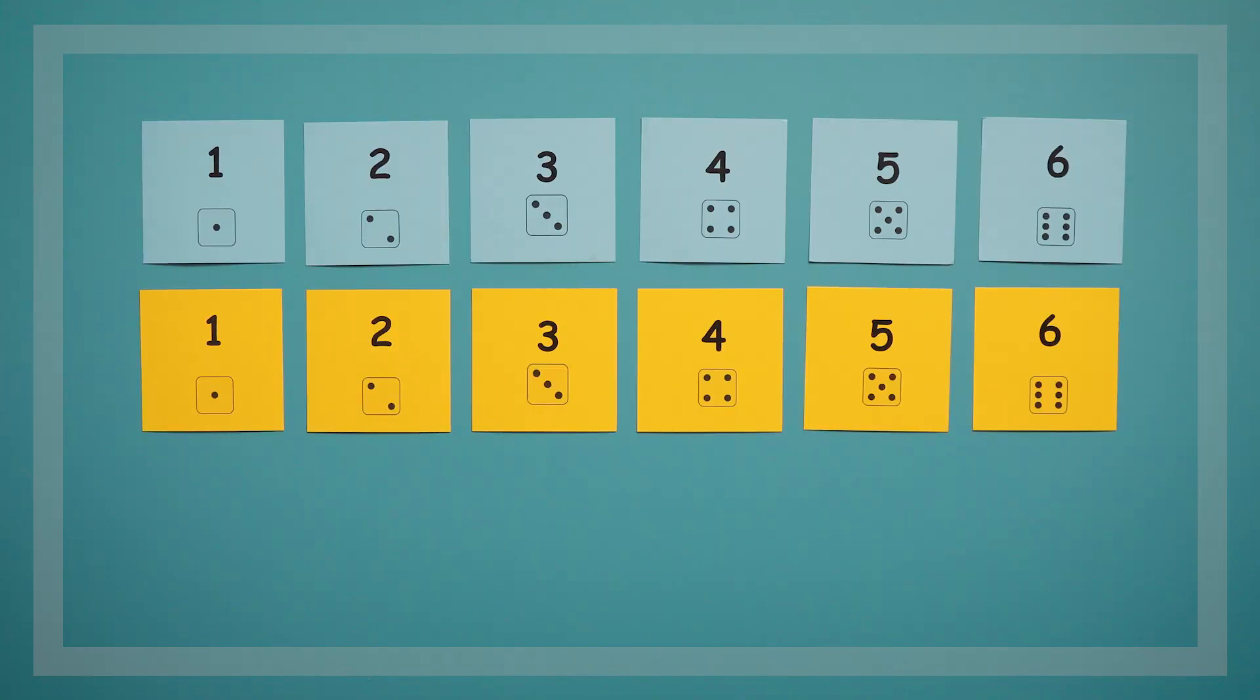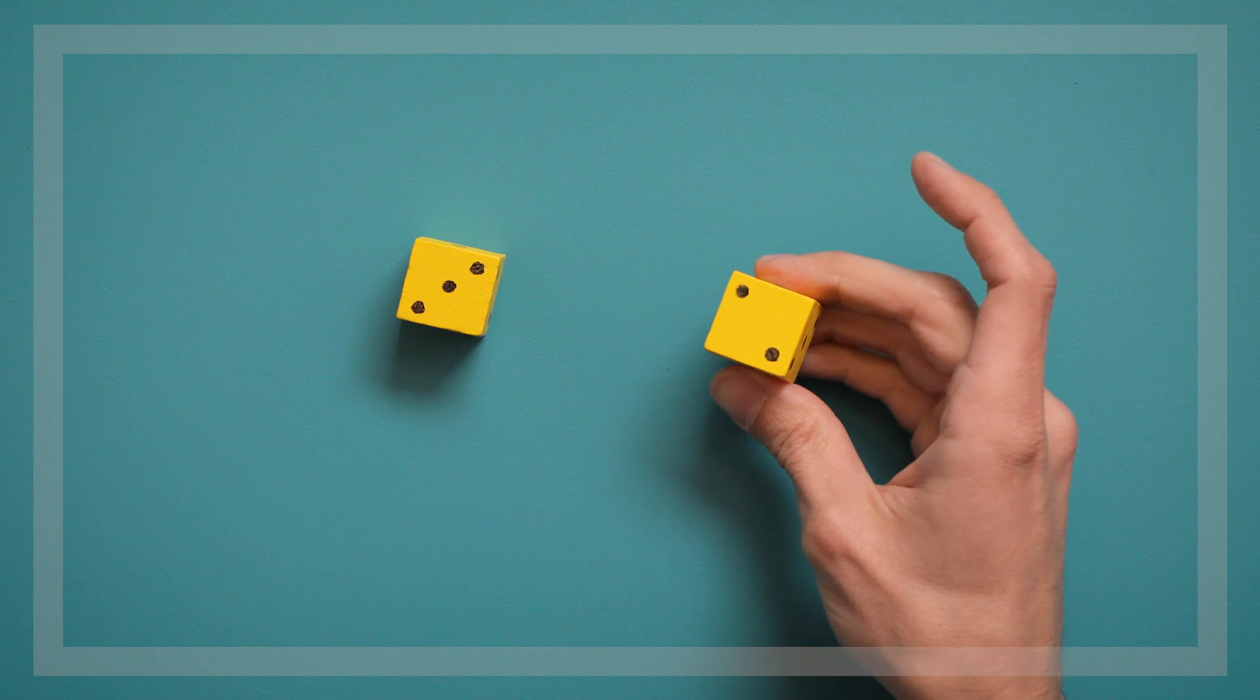If playing with numbers 1 through 6 is too difficult, you can always play with just the 1 through 3 cards and roll a die with only 1, 2, and 3 dots on it.